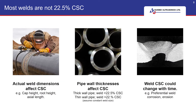However, in most cases, this assumption may not be as accurate as you think. This is because the cross-sectional area change is affected by the actual weld dimensions, which can vary from weld to weld, especially in field welds. Secondly, pipe wall thicknesses also affect the cross-sectional area change of welds — a weld with fixed dimensions will give a smaller cross-sectional area change when found in a thicker wall pipe. Thirdly, the weld cross-sectional area change could change with time due to weld corrosion and erosion effects.